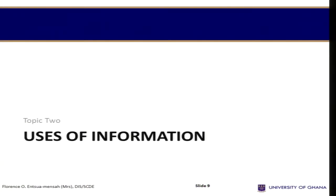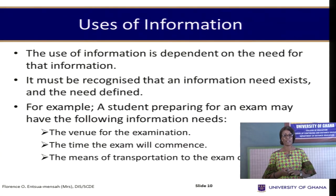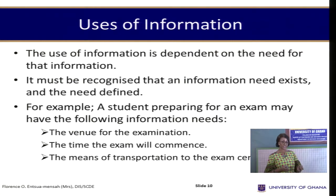What are the uses of information? If you don't know that this production is coming on, how will you access it? So you need a piece of information for everyday life. Nobody can operate or survive without information. The use of information is dependent on the need for that information. It must be recognized that an information need exists, and that need must be defined.